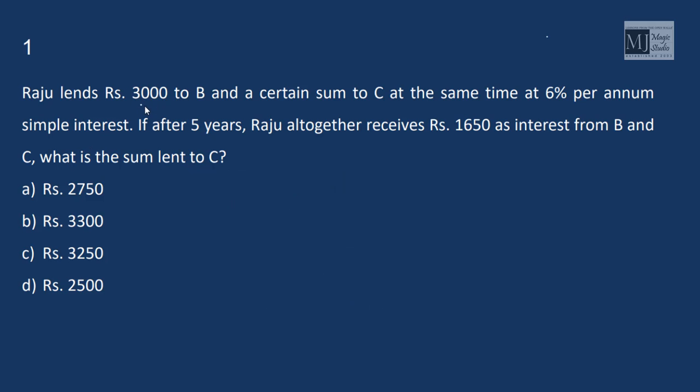Raju lends Rs. 3000 to B and a certain sum to C at the same time at 6% per annum simple interest. If after 5 years, Raju together receives 1650 as interest from B and C, what is the sum lent to C? So now we know the formula to find simple interest that is PRT by 100. So 1650 would be interest received at the rate 6% in 5 years on what amount?